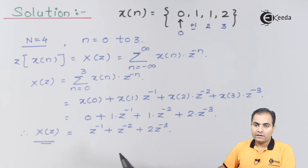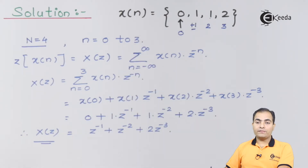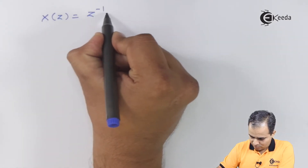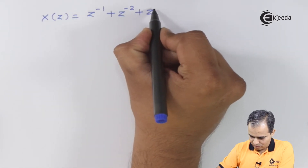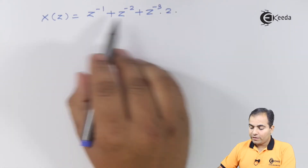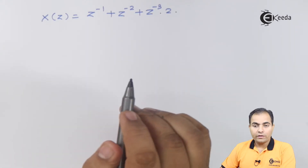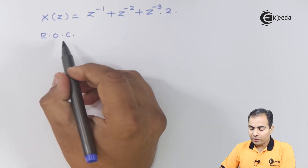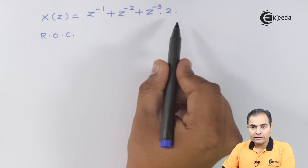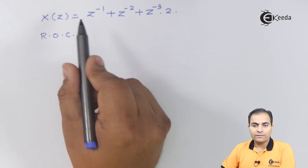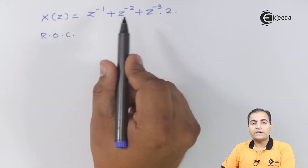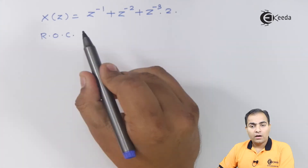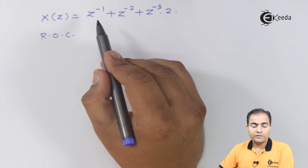This gives us the Z-transform of the given x(n) sample. Now we will find the ROC. We have the equation X(z); before finding the ROC, we try to rewrite X(z) so that all the powers of z are positive — converting all the negative powers of z into positive.